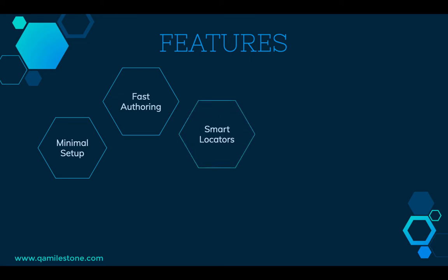Smart Locators — this is Testim's secret ingredient. Even when certain properties of an element change, Testim can still identify the element. Testim's powerful AI-based algorithm identifies hundreds of properties for each element and scores them when you record. And so, if a few properties change, tests don't break.